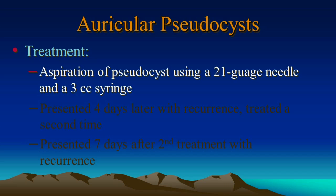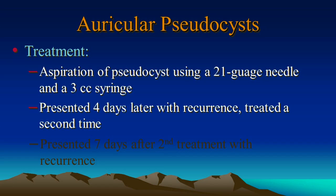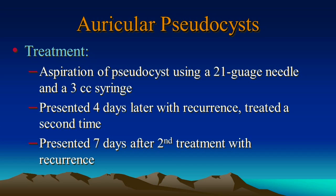Treatment. We aspirated the pseudocyst using a 21-gauge needle and a 3cc syringe. She presented four days later with recurrence, and we treated it a second time using the same technique. Seven days after the second treatment, she presented again with recurrence of the pseudocyst, and at this time we decided to do something different.